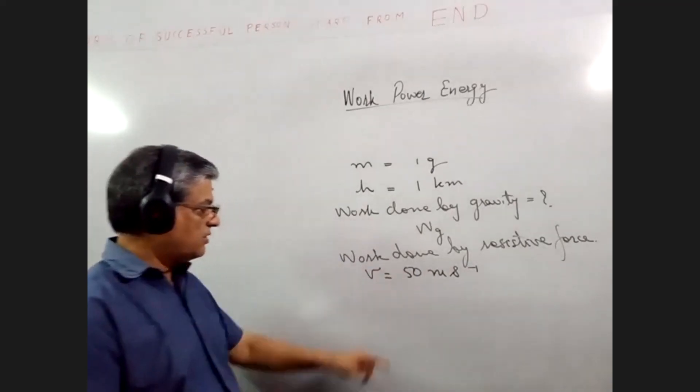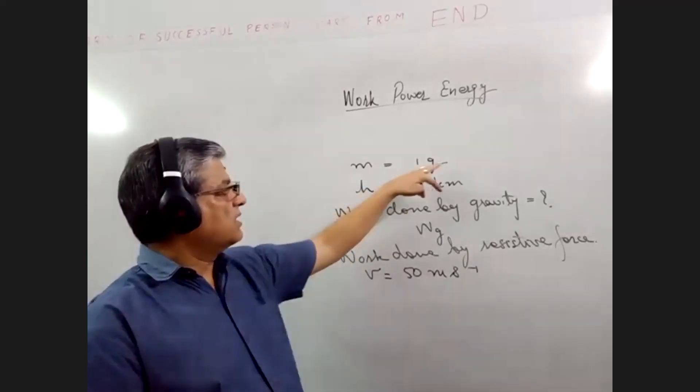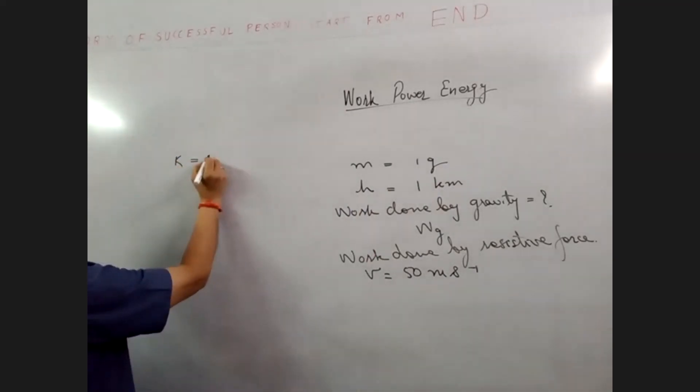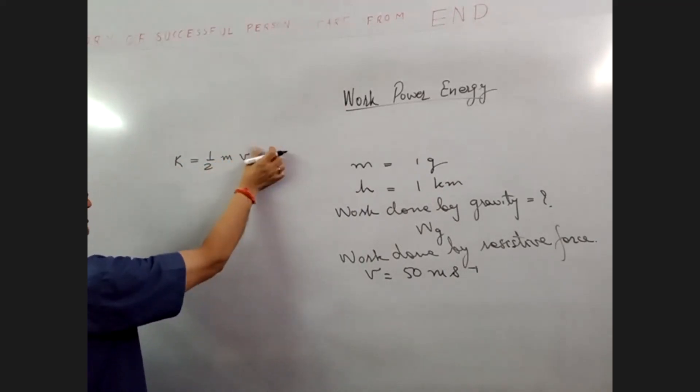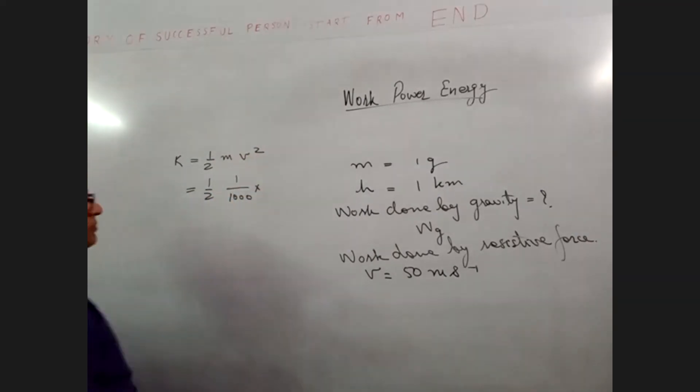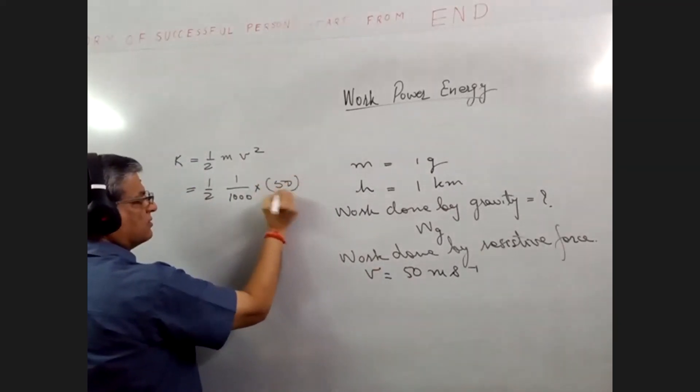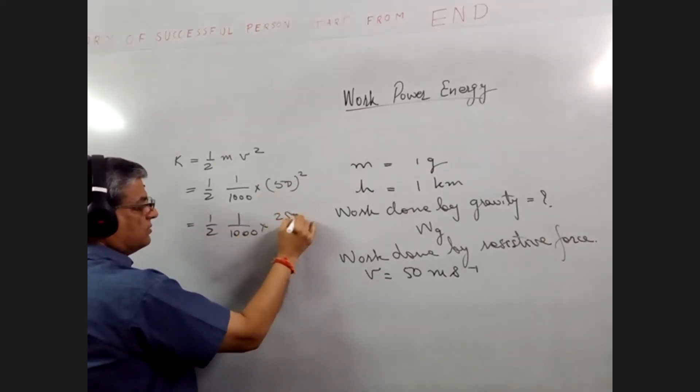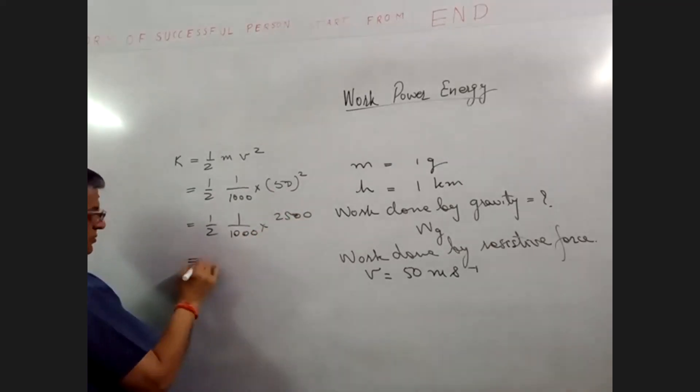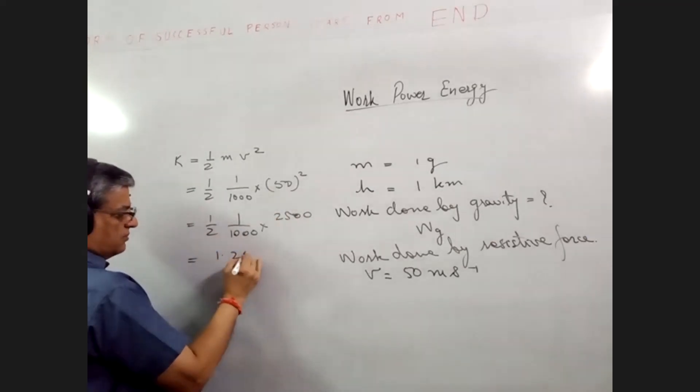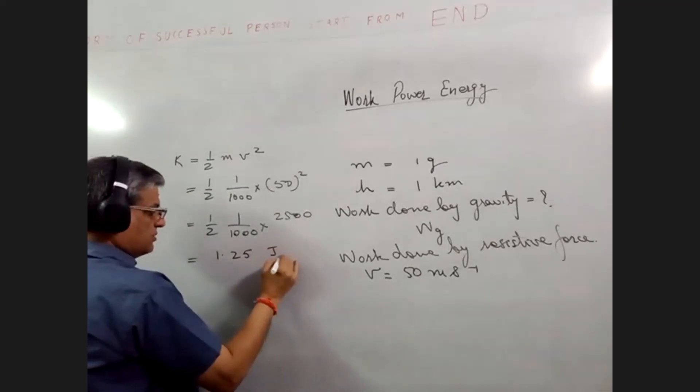The velocity with which the drop hits the ground is 50 meters per second and 1 gram is its mass. So how much is the kinetic energy of the drop? Kinetic energy of the drop is given by half mv square. Half 1 upon 1000 into 50 square. So this is half into 2500. How much is this? 2.5, half, 1.25 joules of energy.